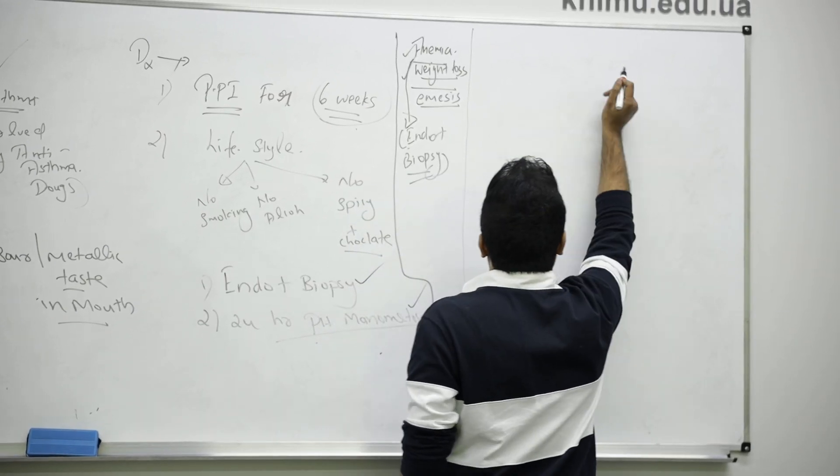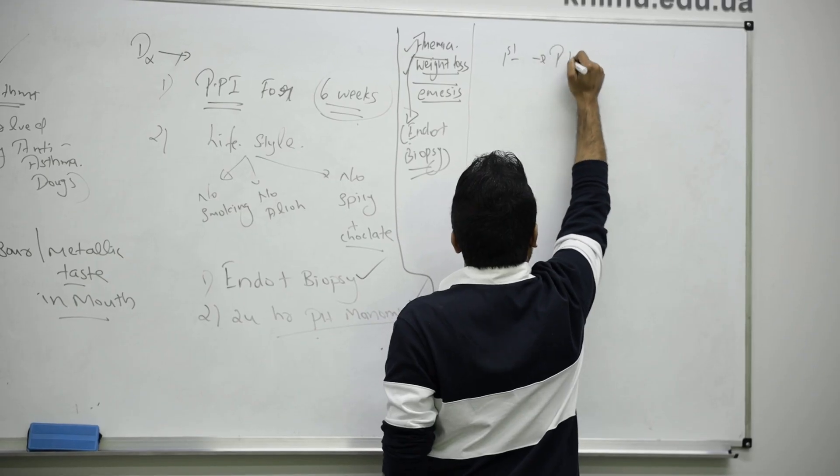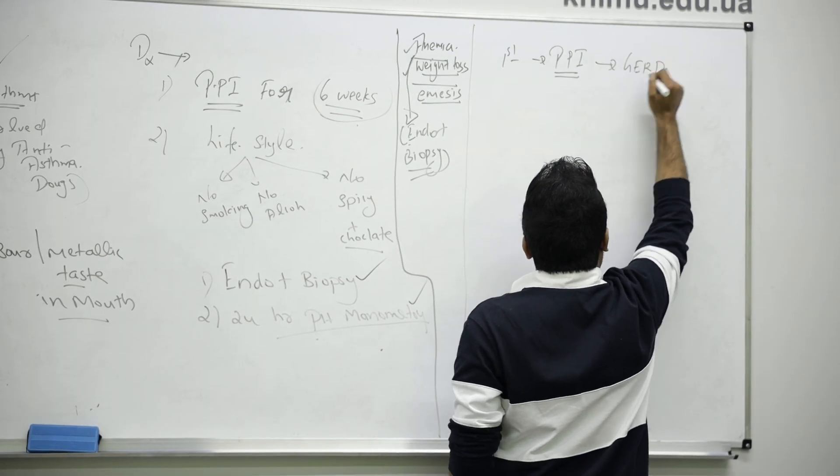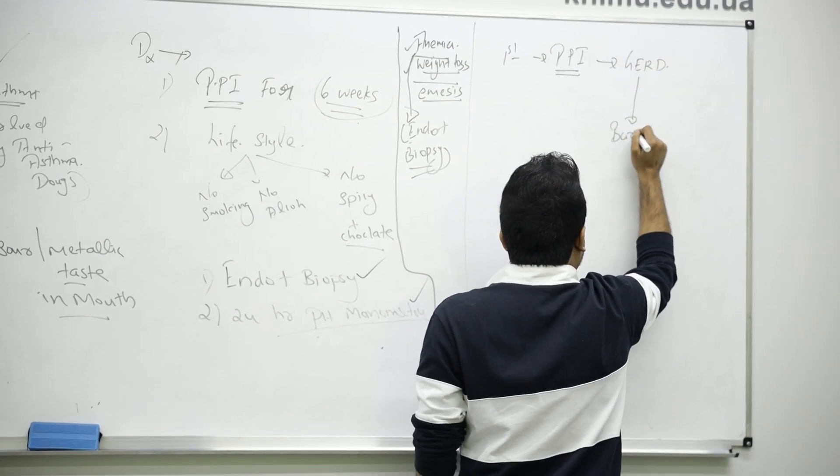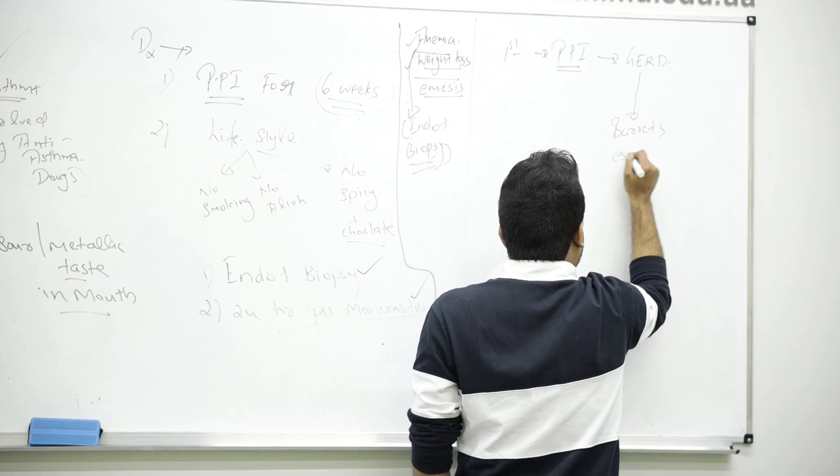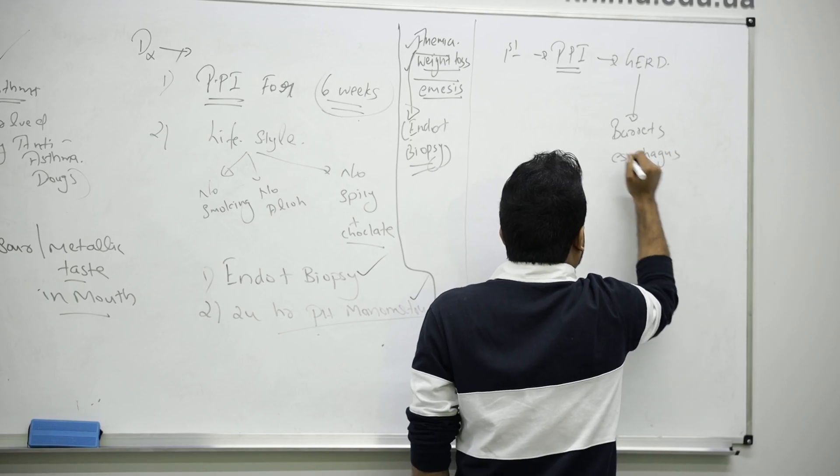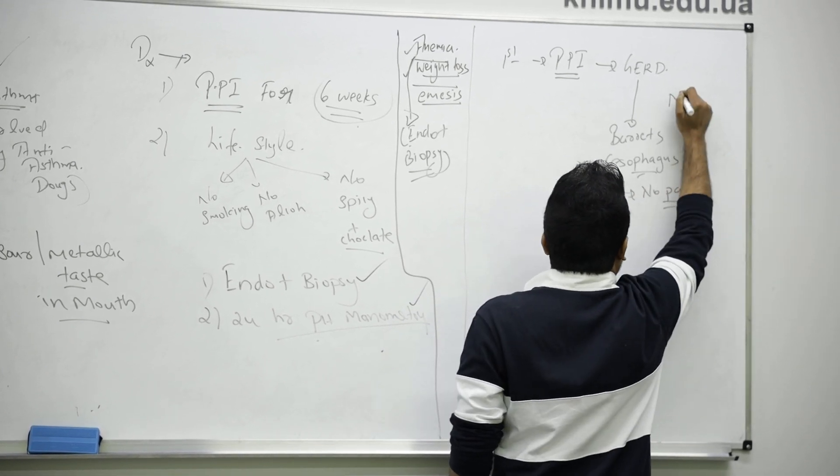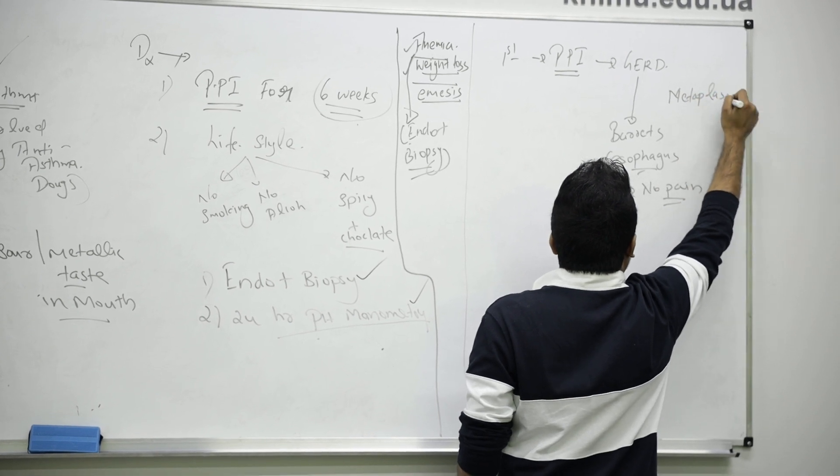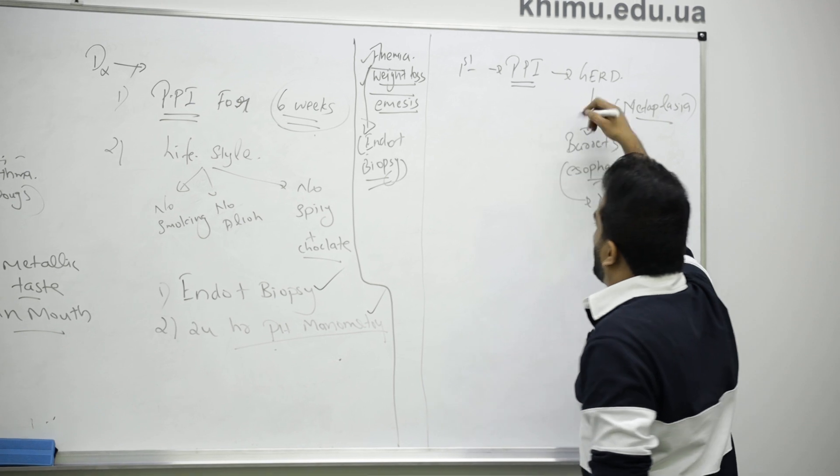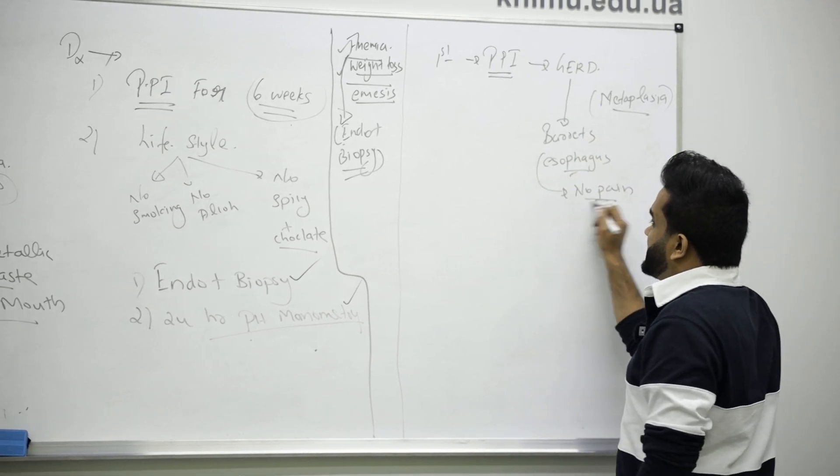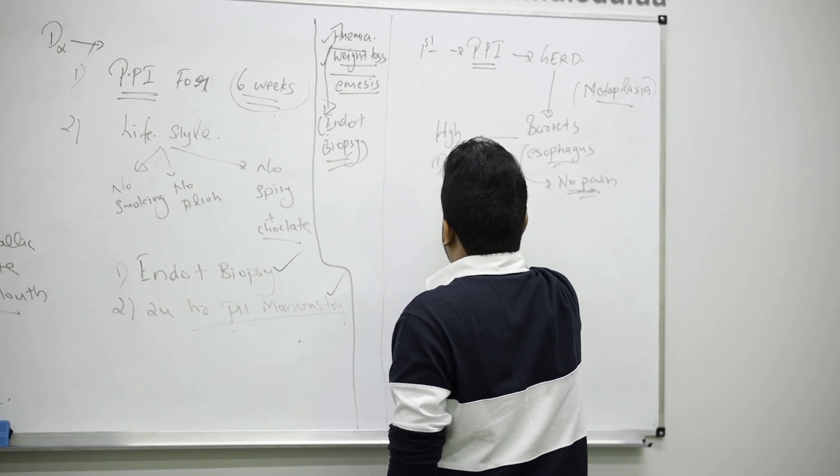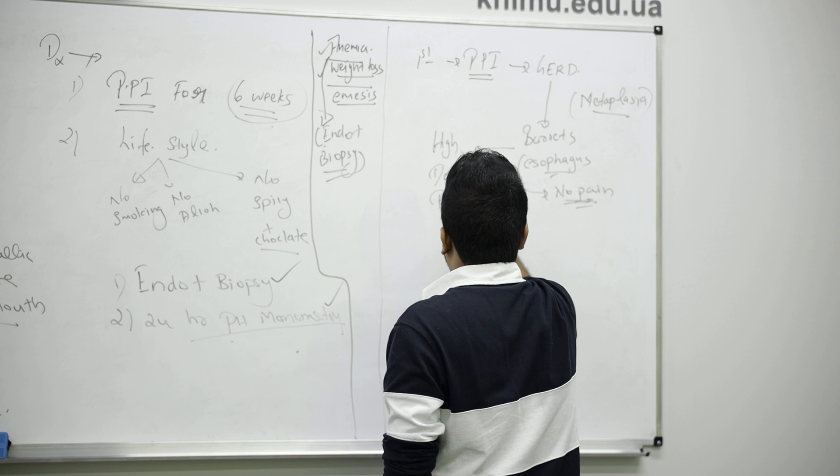First we will try PPI for GERD. Sometimes GERD becomes something called Barrett's esophagus. Here the main thing to remember: there will be no pain for the patient. Something called metaplasia occurred - epithelium was squamous, now it becomes columnar. So there's no pain, so it's dangerous actually. For Barrett's we give high-dose PPI.